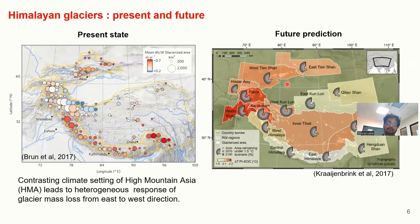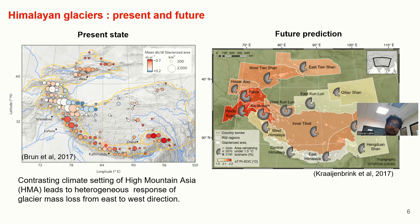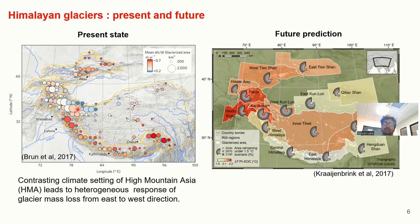Now let's look at the present and future state of glaciers over High Mountain Asia. The left-hand side plot shows the present mean mass balance of glaciers over High Mountain Asia. Overall, there is a negative mass balance except in regions such as Karakoram and Pamir. This negative mass balance indicates that glaciers are losing more mass than they gain, so glacier ice storage is currently depleting. There is spatial variability in mass loss, and we also see some mass gain over Karakoram and Pamir, which is mainly driven by the different climate setting there.